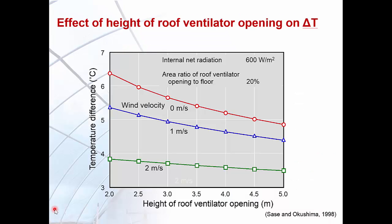Here is an example demonstrating the effect of the height of the roof ventilator opening from the floor on the temperature difference between the greenhouse interior and exterior. This example is from a naturally vented greenhouse without side vents, using a heat balance equation under steady-state conditions, assuming an internal net radiation of 600 watts per meter square and a roof ventilator to floor opening area ratio of about 20%. The data shows that temperature rise decreased as the height of the opening increased for all cases of external wind speed.